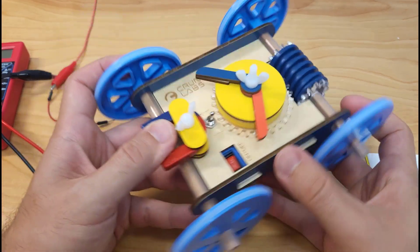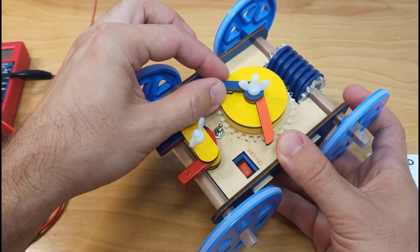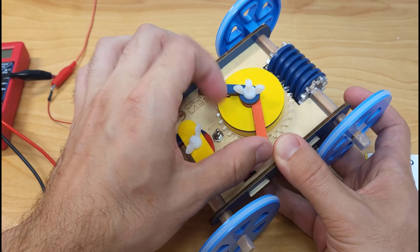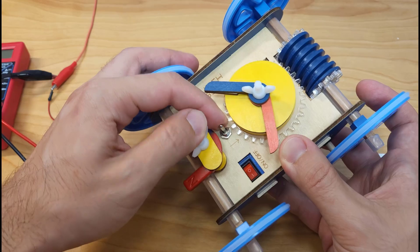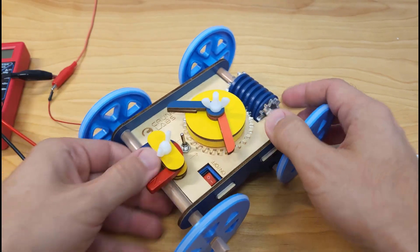All right, this is the Crunch Labs Boomerang car, and how this is supposed to work is that as the car drives forward, this worm gear drives this one, and these two arms here will gradually rotate and hit this toggle switch, which should then reverse the direction of the motor and make the car drive the other way.